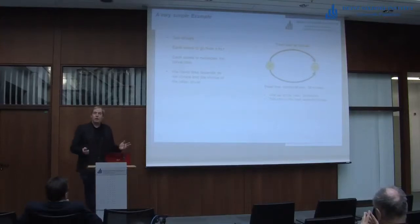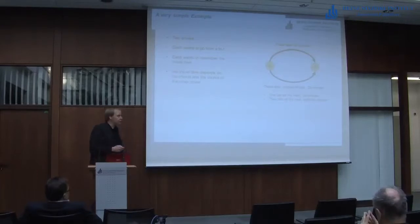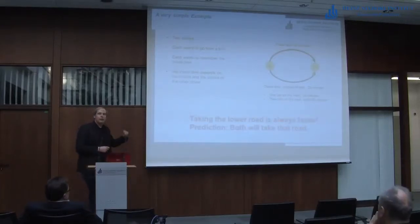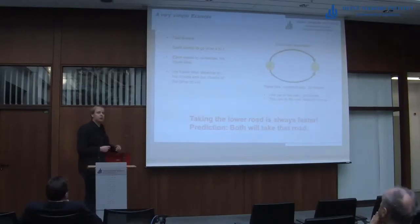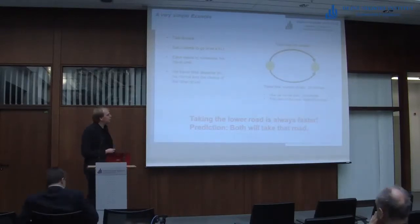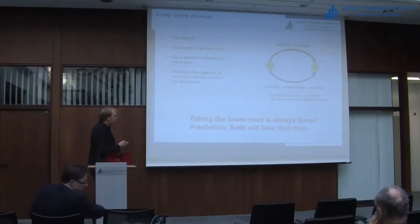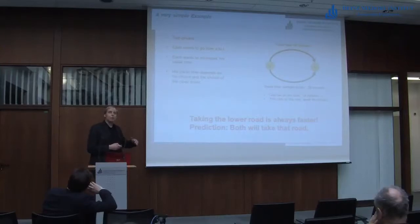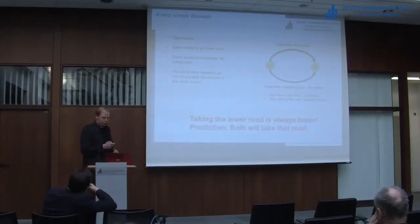The question in such a situation is: what's going to happen? In this very simple example it's straightforward, because we can argue that in every case taking the lower route is always faster, because 58 is always less than 60. We want to study situations like that, but of course in a bit more complicated, general setting.